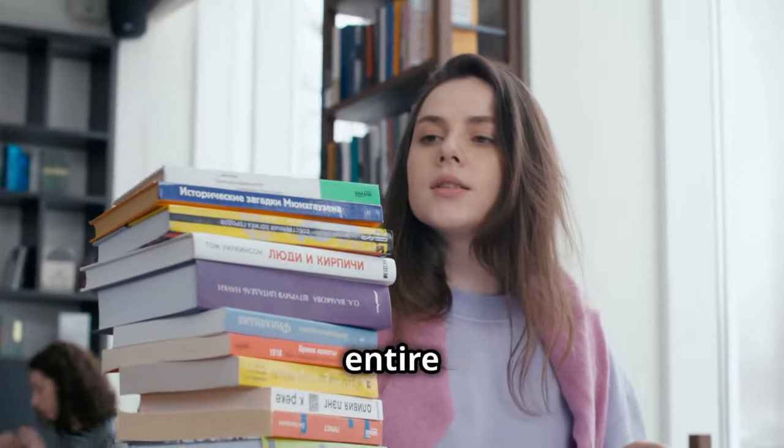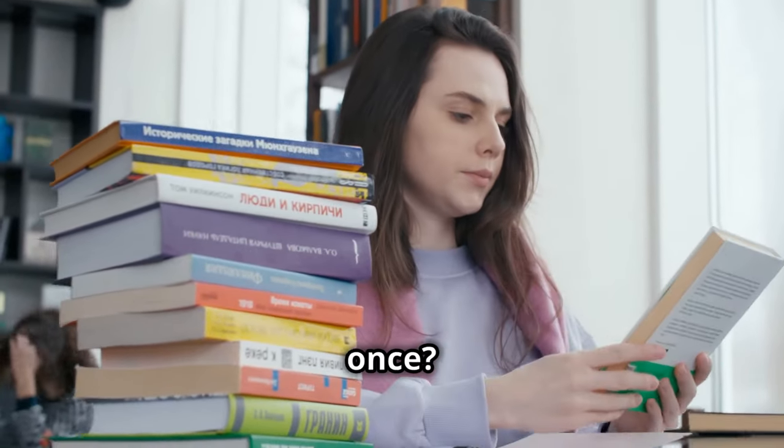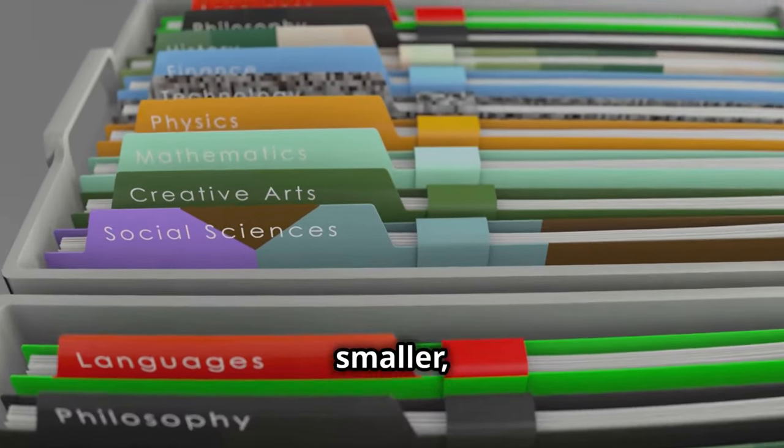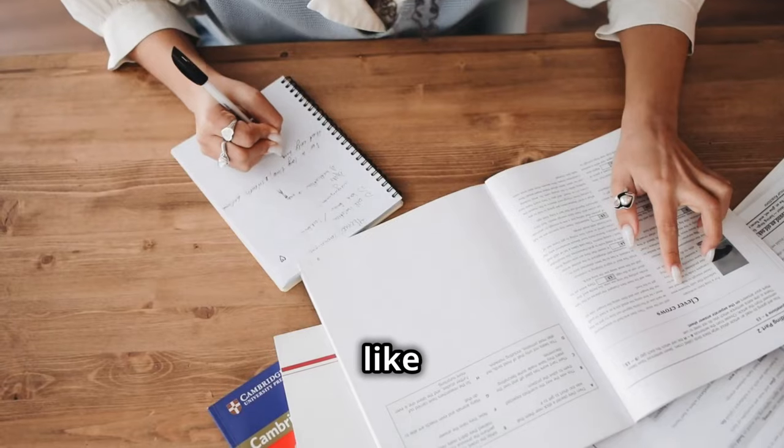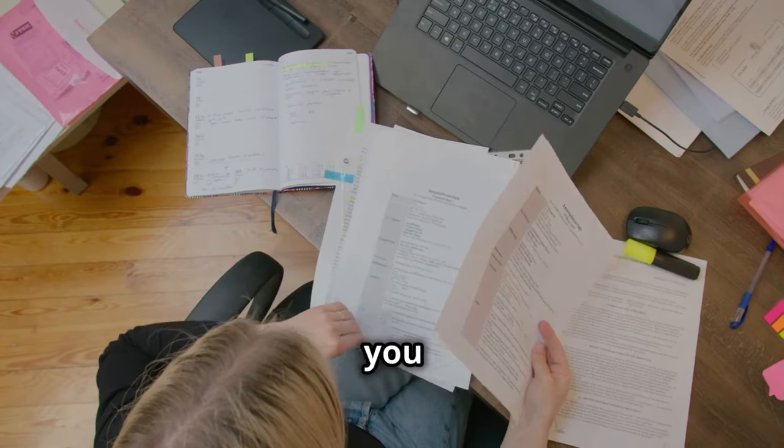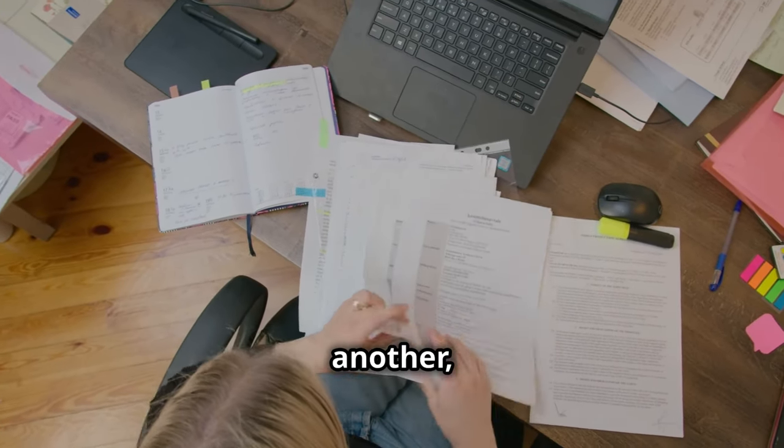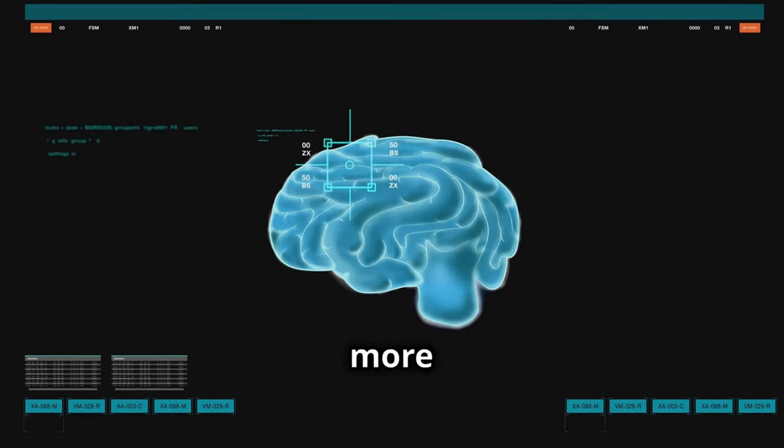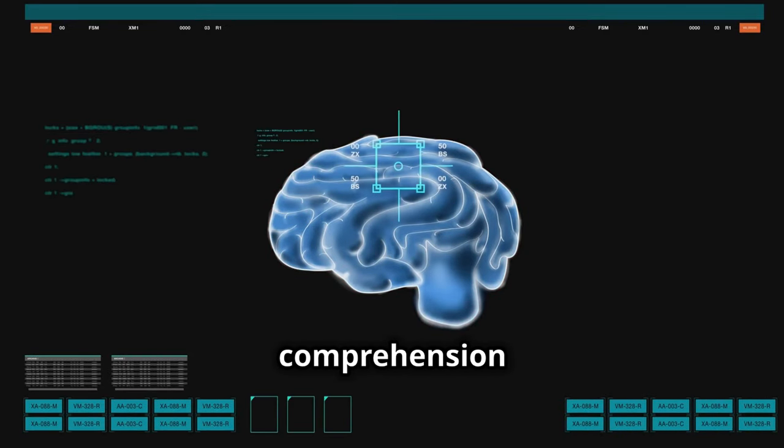Ever tried to cram an entire textbook into your brain at once? Yeah, not a great strategy. Instead, break down large amounts of information into smaller, manageable chunks. This is like organizing a messy room – you start with one drawer, then another, until everything is in its place. Your brain can process these chunks more easily, leading to better comprehension and retention.